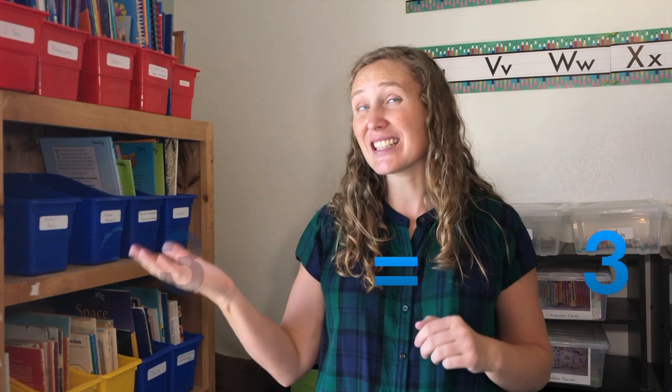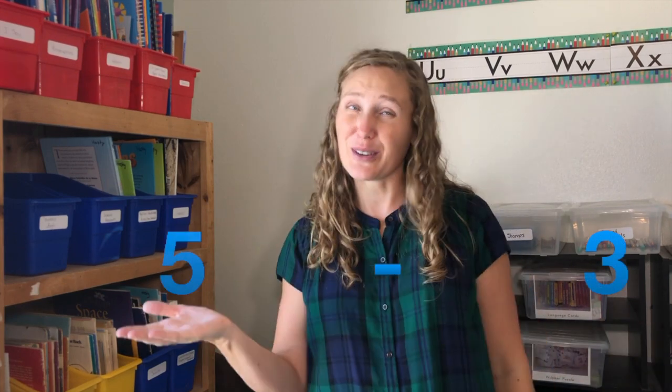Let's start with a rhyme. I am an equal sign, that's my name. What's on one side, the other is the same. I am a plus sign, look at me. See that number added on to me. I am a minus sign, look at me. See that number, take away from me.